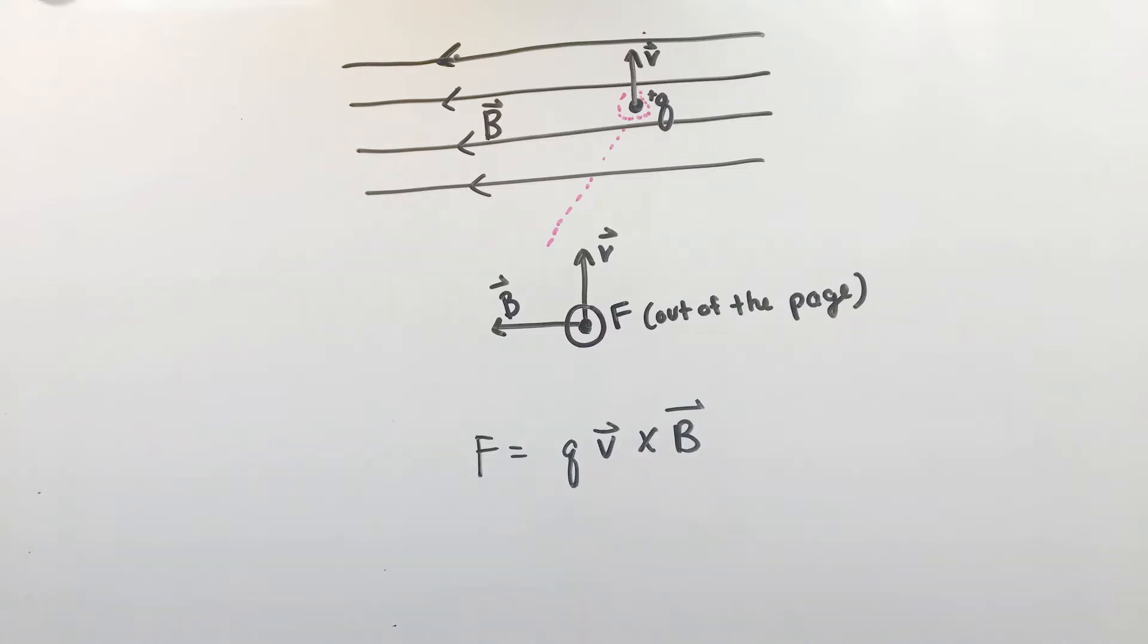In addition, for electrons or other negatively charged objects, make sure to reverse the direction found using the right-hand rule, as your charge Q will have a negative sign attached to it.